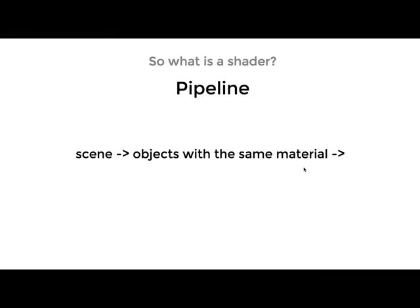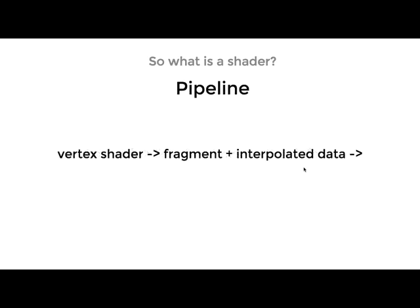So you have the scene, and your scene is made of many objects, textures, shaders, and much more. Some objects have the same material, so you can get them in the same draw call, which will be a list of vertices, texture data, and shaders or other information. These are passed to the vertex shader, which will execute on every vertex. It will give you interpolated information and data to pass to the fragment shader, which is where our lighting is happening, and that will give you the final pixel color.